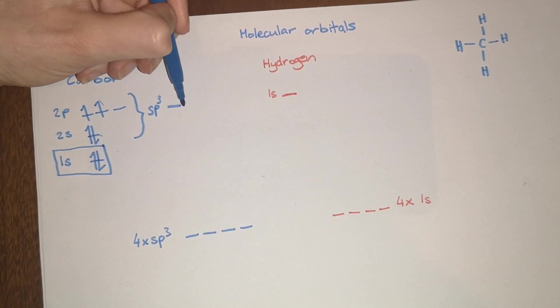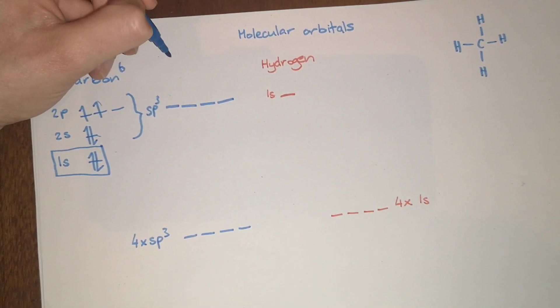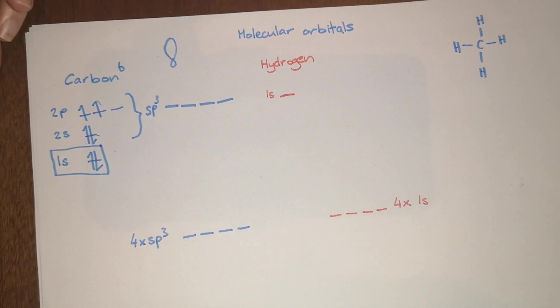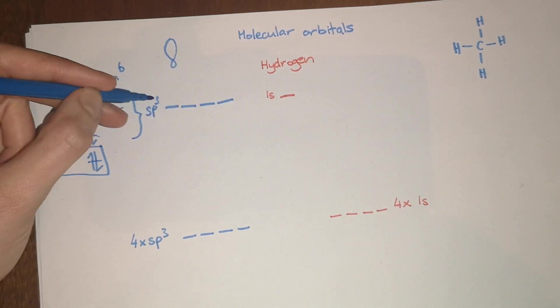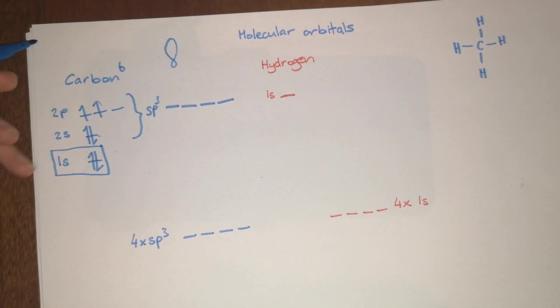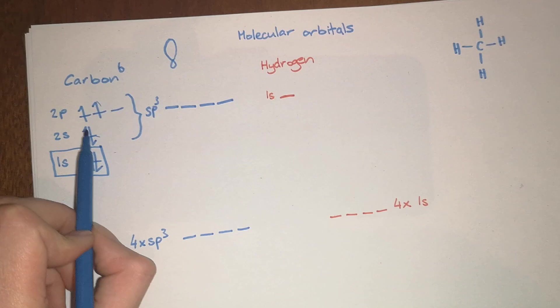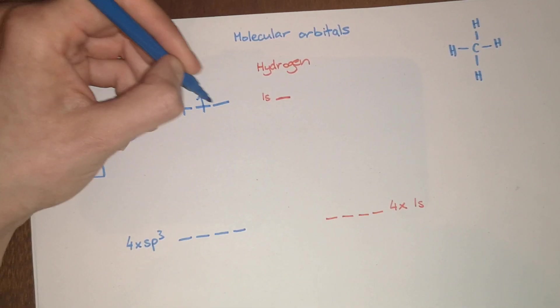The resulting hybridized orbitals are three quarters p character and one quarter s character, so the orbital is going to be like a dumbbell but really lopsided because of the s orbital character. The energy of these orbitals is going to be most of the way towards the energy of a p orbital because they're three quarters p. Now we have four orbitals of equal energy and four electrons, so they are going to populate each orbital singly.